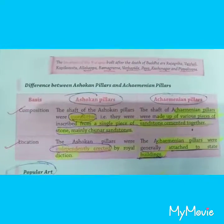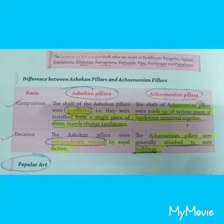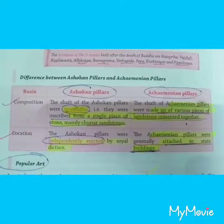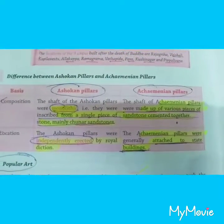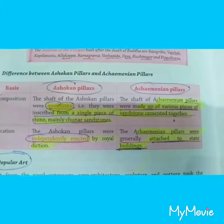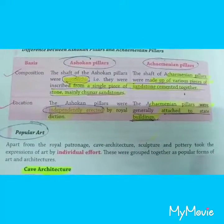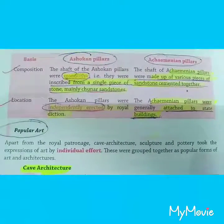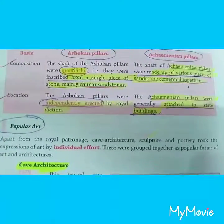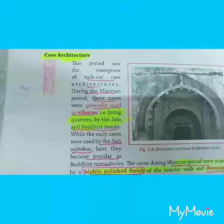The difference between Ashokan pillars and Achaemenian pillars: in Ashokan pillars, the shaft was a monolith — that is, made of a single piece of stone — whereas in Achaemenian pillars, the shafts were made up of various pieces of sandstone cemented together. Additionally, Ashokan pillars were independently erected by royal decree, whereas Achaemenian pillars were generally attached to state buildings.